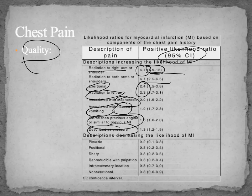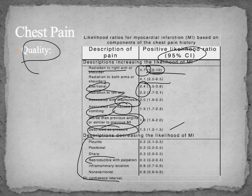If it's described as a pressure — a tightness or pressure in the chest — look for an MI. Things that have a lower likelihood value: pleuritic, positional, sharp, reproducible with palpation. Reproducible with palpation, you're probably looking at chest wall pain, so musculoskeletal. If the pain is described as sharp, you want to think about aortic dissection.